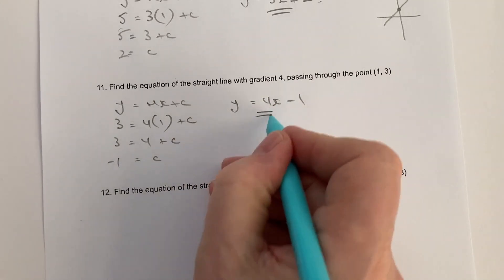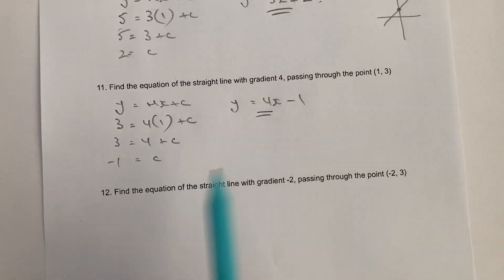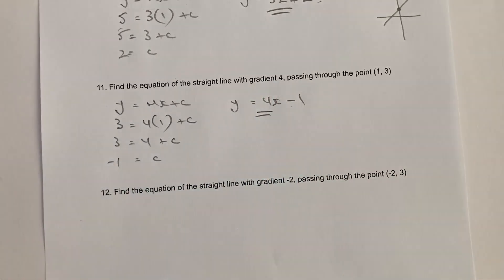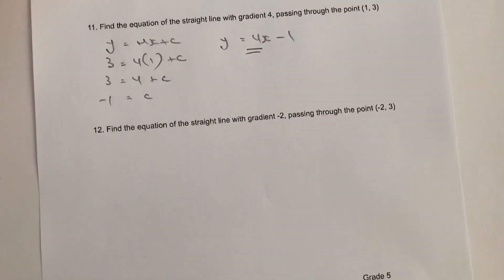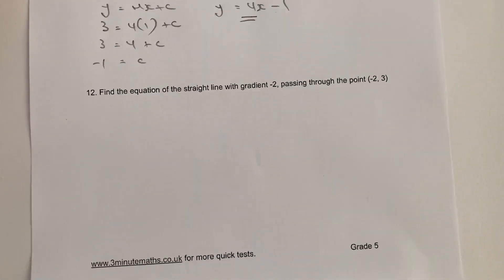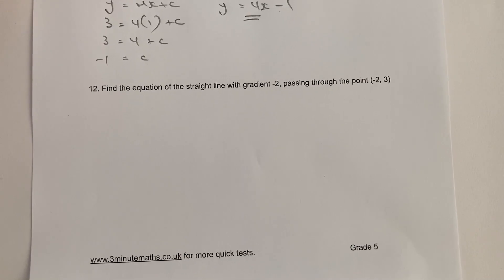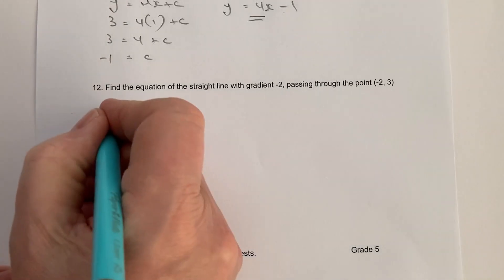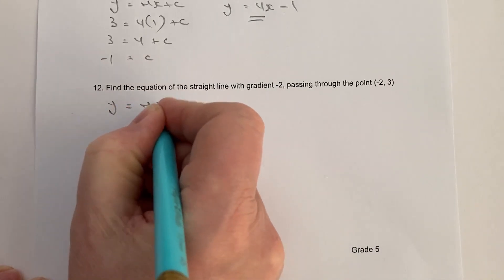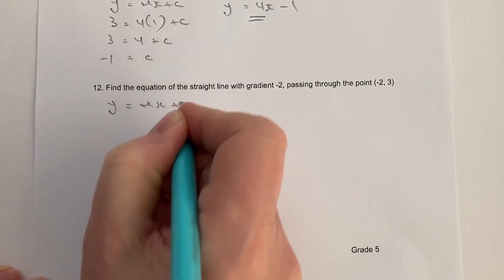Four is the gradient that we're already told, and minus one is the c-intercept. Let's have a go at question number 12, which involves a negative sign, but it shouldn't really faze you too much. All we're going to do is apply exactly the same thing: y equals mx plus c.